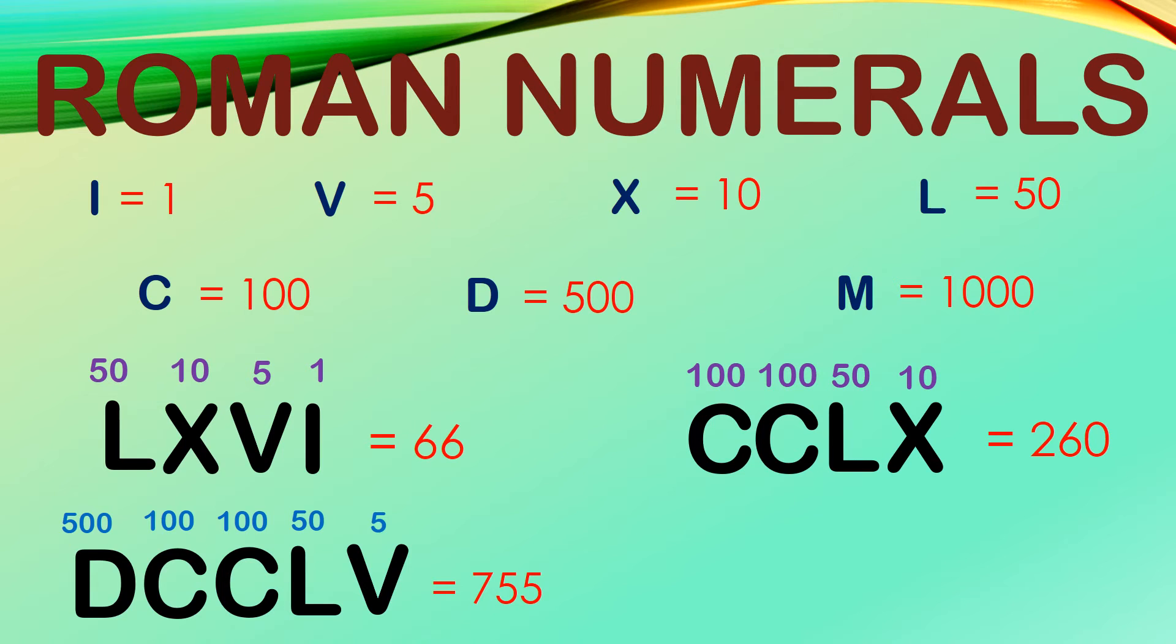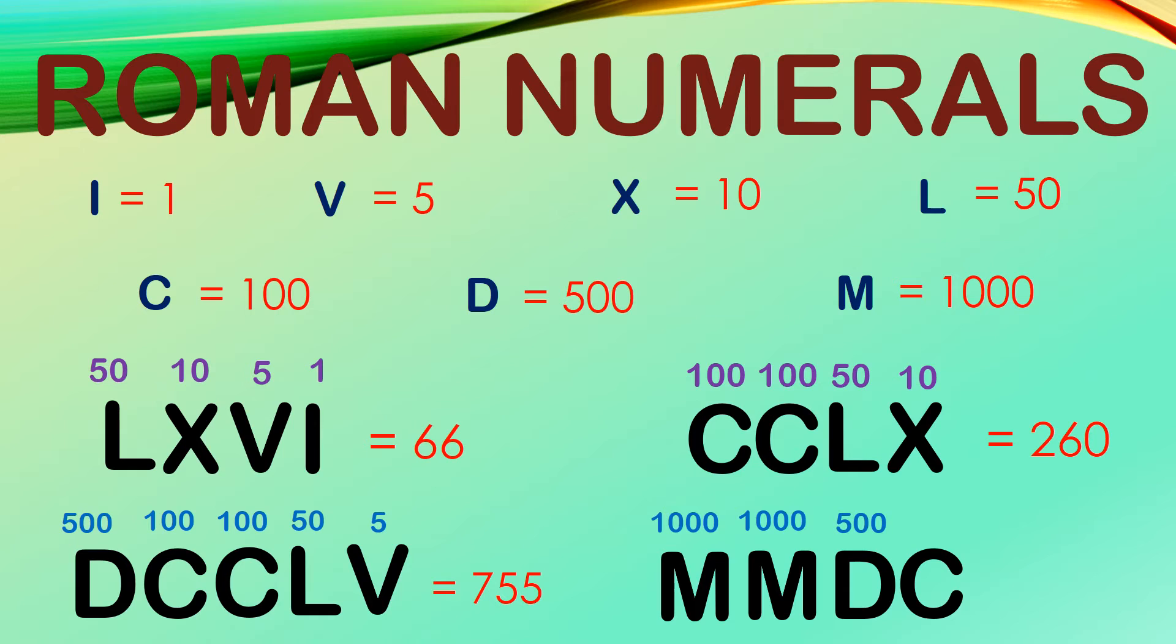What about this one? M, M, D, C. M is for 1,000, we have two of them, D is 500, and C is 100, all together, it gives us 2,600.